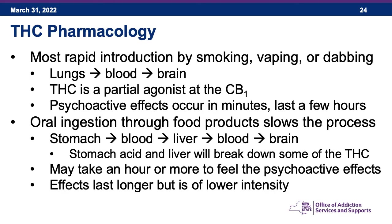THC most rapidly gets into the body by smoking, vaping, or dabbing — smoke goes into the lungs, gets absorbed into the blood, and goes straight to the brain. THC is a partial agonist at the CB1 receptor, meaning it activates the receptor but not completely — like a dimmer light switch turned about halfway. Despite this partial activation, you still get psychoactive effects fairly quickly when smoked, within minutes, lasting a few hours.